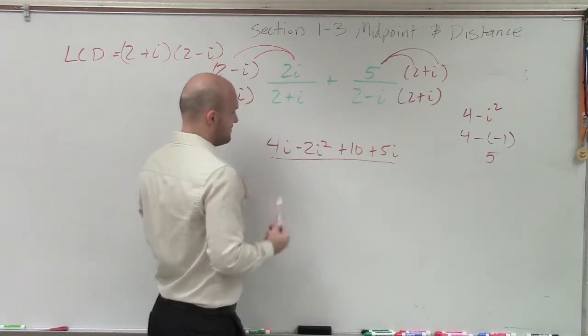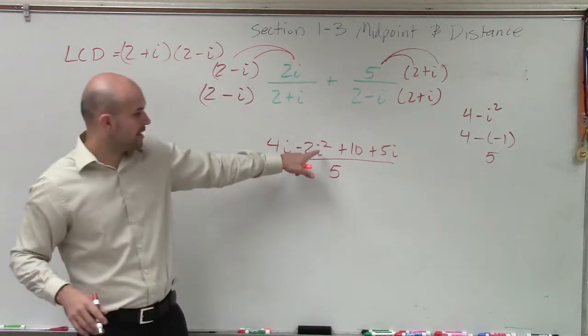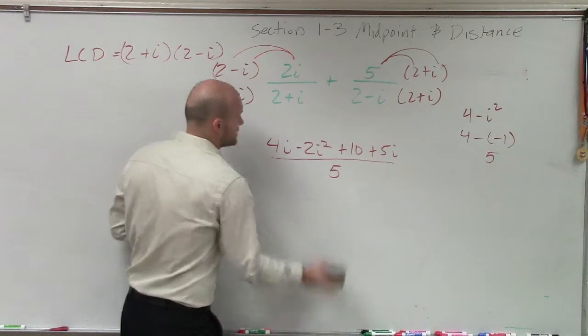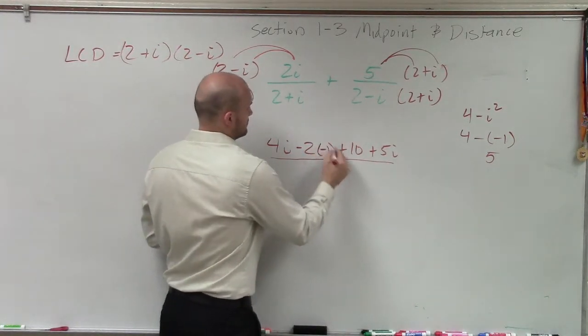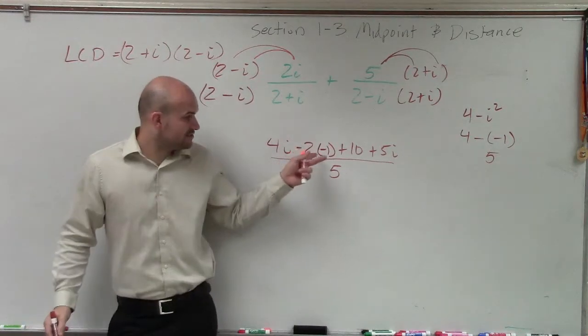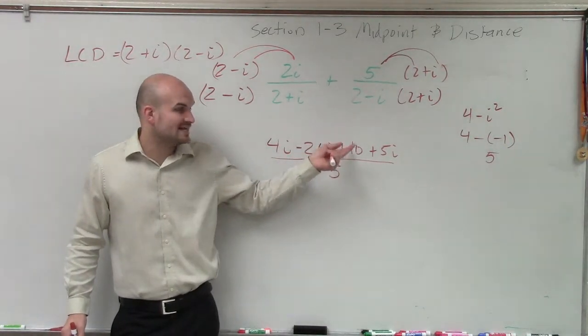So if I have this equal to 5 on the denominator, I will now replace my i² again with another negative one. Therefore, I can do negative 2 times negative 1, which is a positive 2. Positive 2 plus 10 is 12.